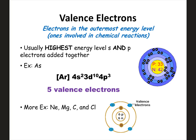For example, for arsenic — element 33 — the kernel notation is [Ar] 4s², 3d¹⁰, 4p³. The highest energy level is 4. There are 2 in the 4s and 3 in the 4p, so 3 plus 2 gives arsenic 5 valence electrons. It's that simple: just find the highest S and P electrons for an element, add them together, and you know the total number of valence electrons.